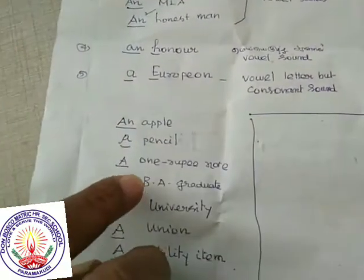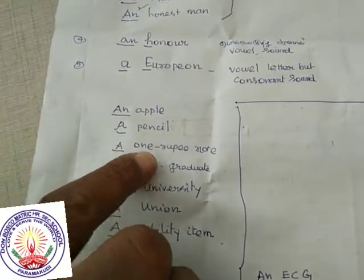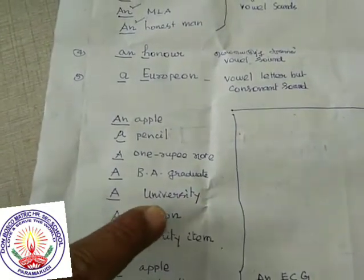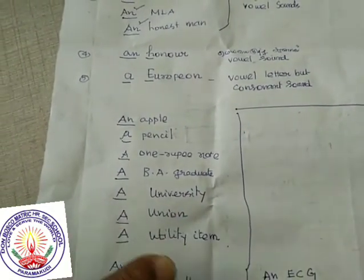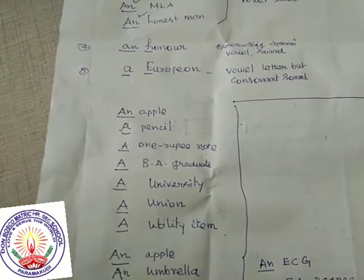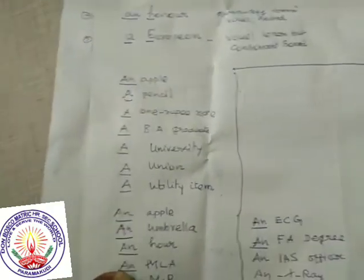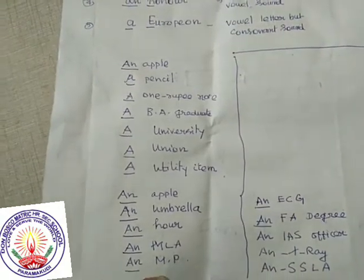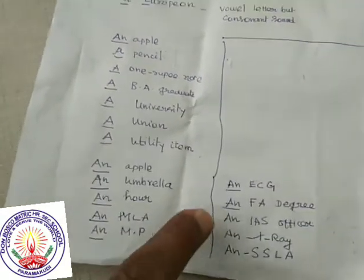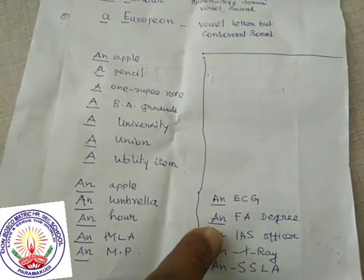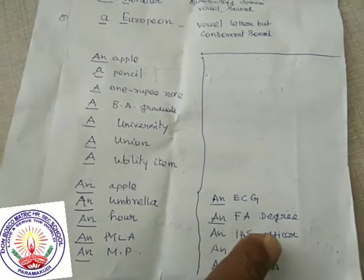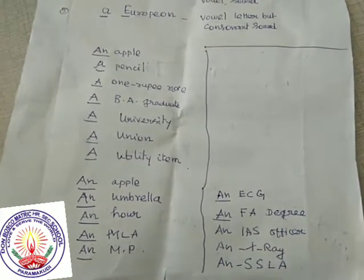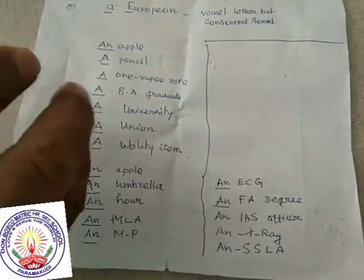Another examples: an apple, a pension, a one-rupee note, a BA graduate, a university, a union, a utility, an apple, an umbrella, an honor, an MLA, an MP, an ECG, an FA degree, an IAS officer, an X-ray, an SLC. What are they?